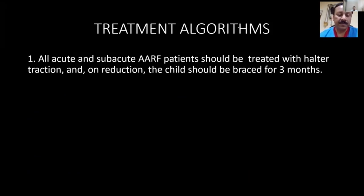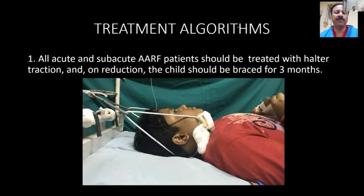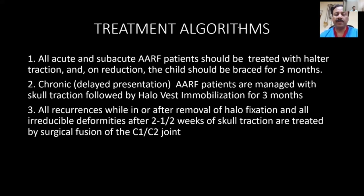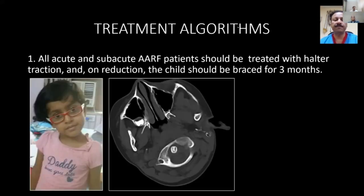Now let us look at the treatment algorithms. All acute and subacute atlanto-axial rotary fixation patients should be treated with halter traction, and on reduction the child should be braced for three months. This is the typical patient presentation in an acute and subacute phase, and they are usually well treated with patients remaining asymptomatic.